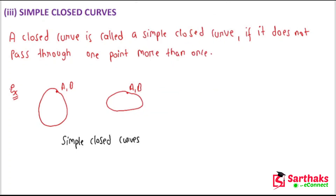Now let me draw curves which are not simple closed curves. In this figure, this curve is intersecting one point more than once — it continuously crosses the same point twice. The first time it already passed through this point, then following the shape, the curve passed through the same point again. So this point has been repeated twice — this is not a simple closed curve.